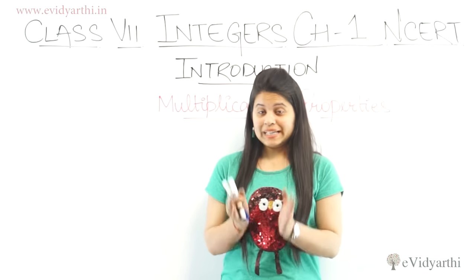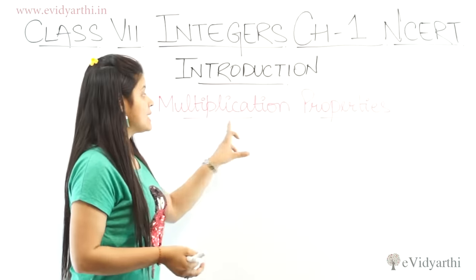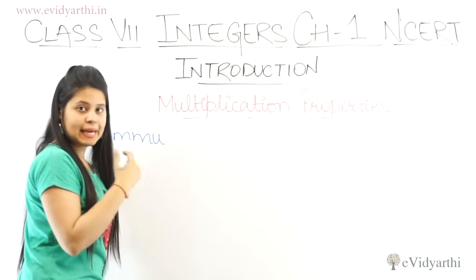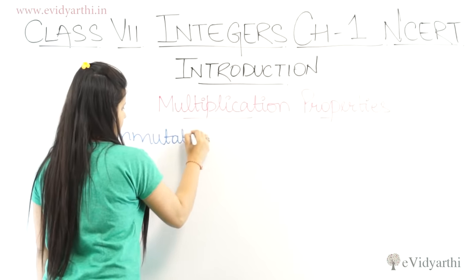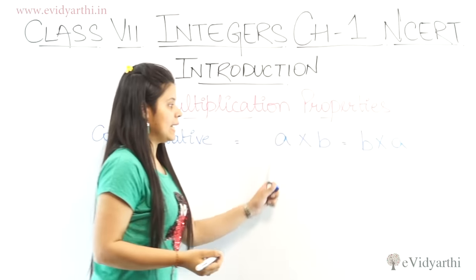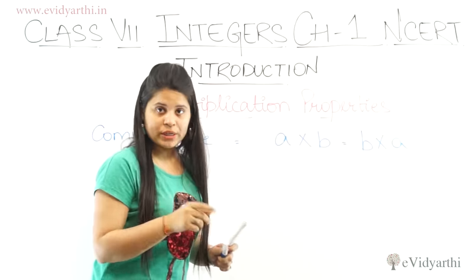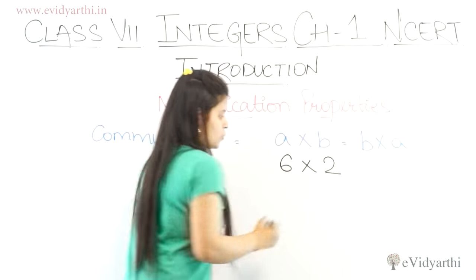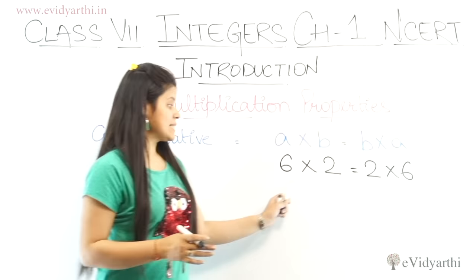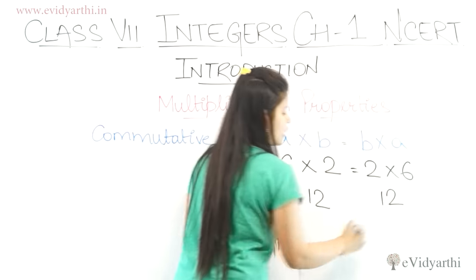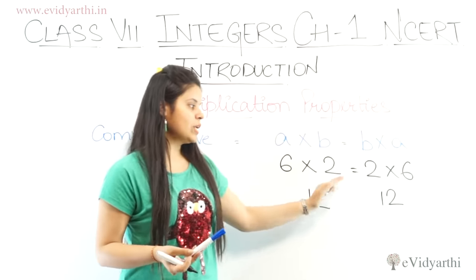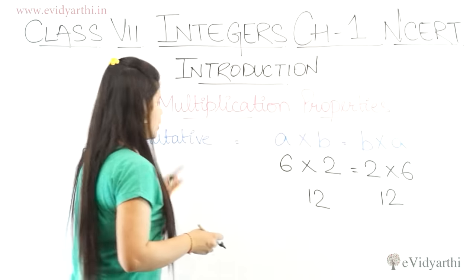Now our next topic is multiplication properties. Just like addition, multiplication also has properties. The first is the commutative property: a into b equals b into a. This means if you have two integers, like 6 and 2, then 6 into 2 equals 2 into 6 — both equal 12. So in multiplication, you can swap the order of numbers.